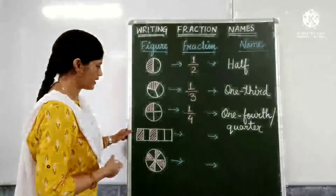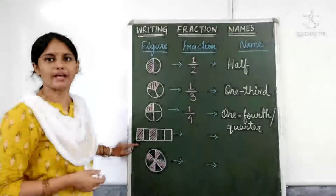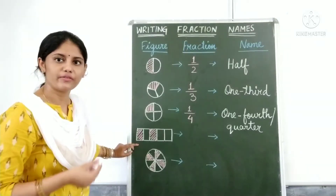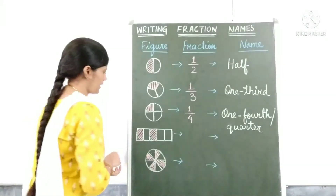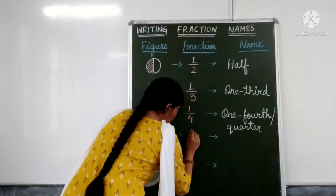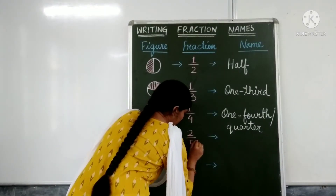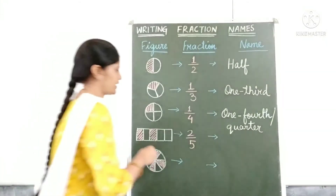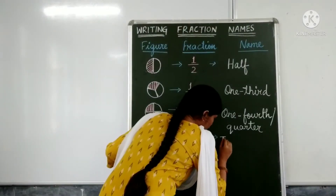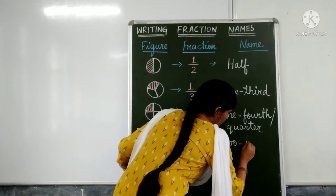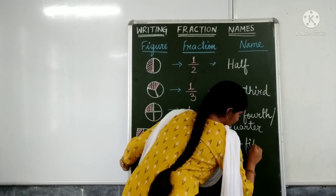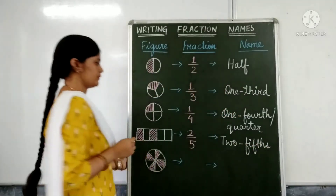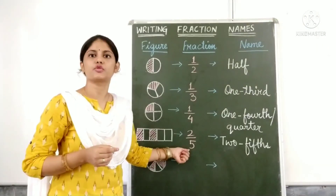In the next figure, we have a rectangle which is divided into 5 equal parts. The fraction for the shaded parts is 2 by 5. Its name is two fifths — 2 parts out of 5 parts is two fifths.